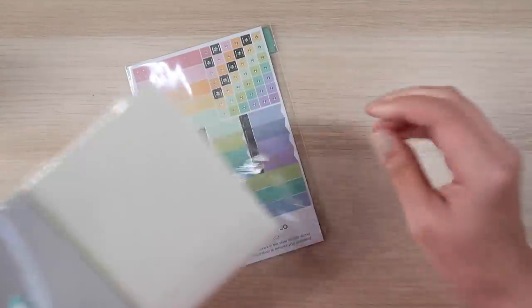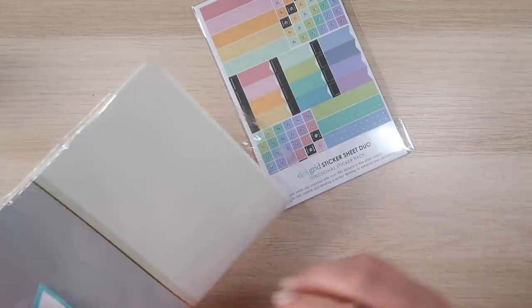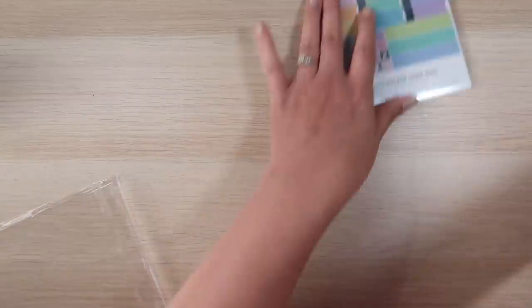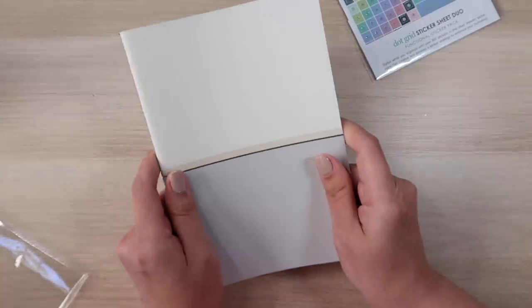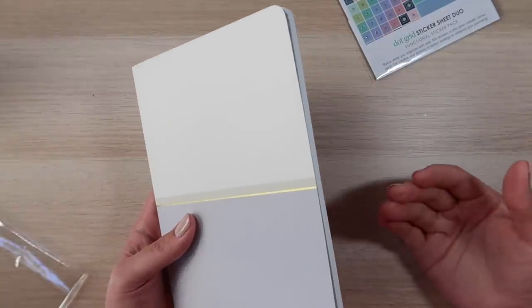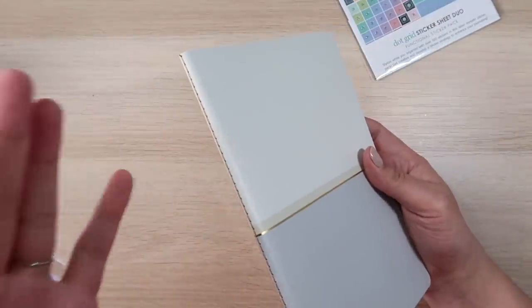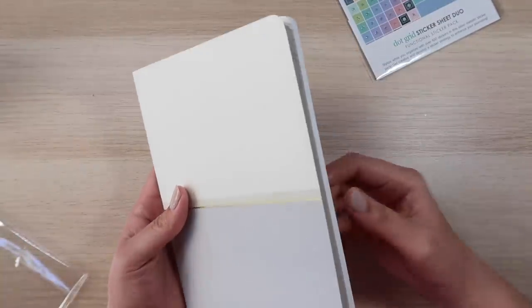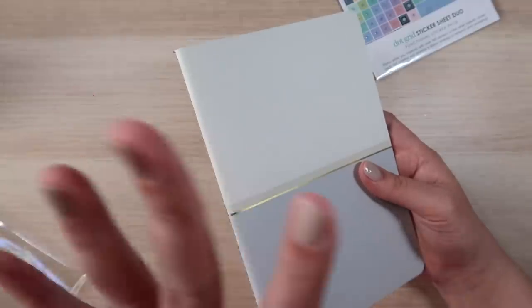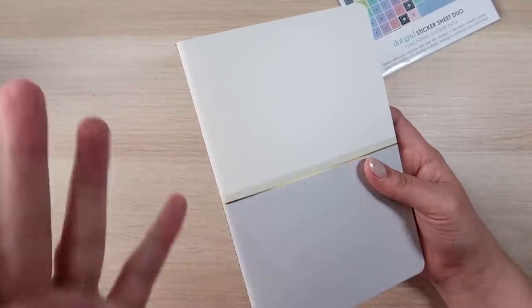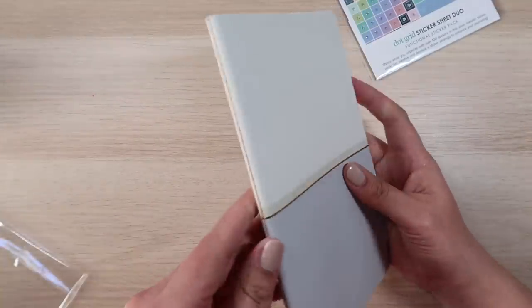I also grabbed the stickers, the dot grid stickers, and I'm going to take a look at those too. But for now we'll look at the journal. This is $9. It's not inexpensive, but if the paper quality is nice, then it's not, like my Archer and Olive is $30. So it's not a terrible price. Not a great price, not a terrible price. Kind of medium price, I guess.